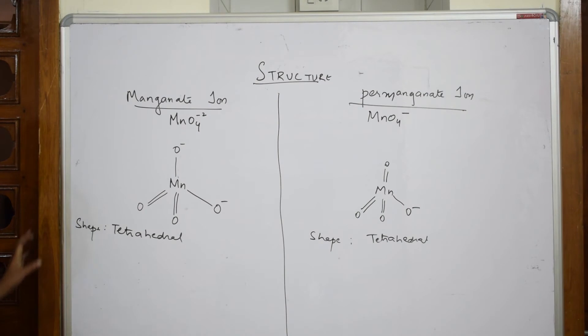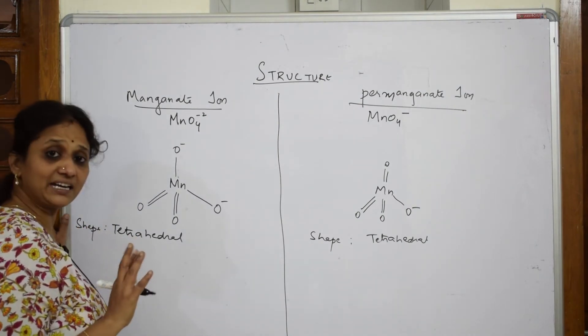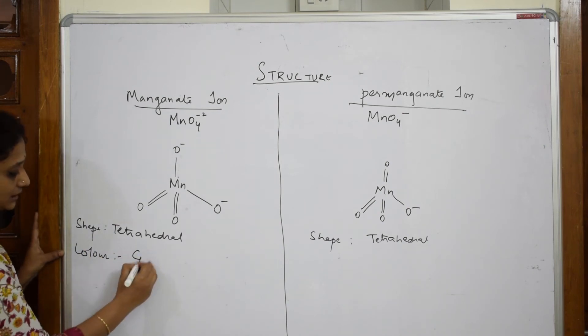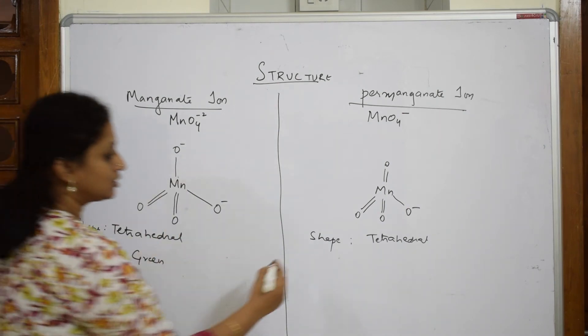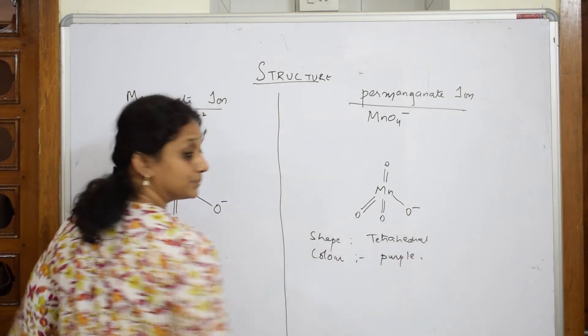Now, let us come back and see. We have already studied the color of manganate ion is green. This is the green colored ion. The color of permanganate is purple.